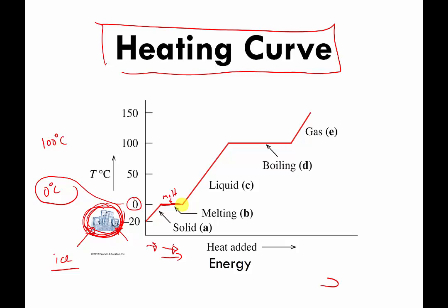Eventually you add enough heat that all of the ice has melted — that's where this corner is. If you continue to add heat or energy, you'll now have very cold liquid water. As you keep adding heat, the temperature of the water starts to go up, from 0 degrees Celsius to warmer and warmer temperatures, until you have very hot liquid water at 100 degrees Celsius.